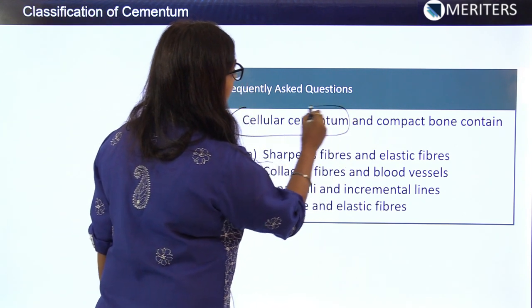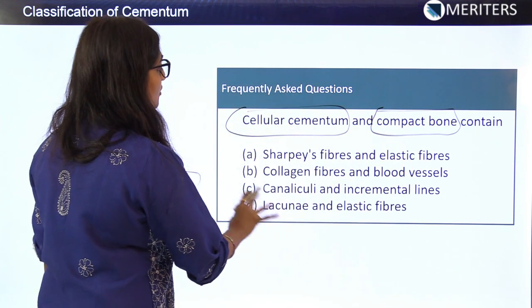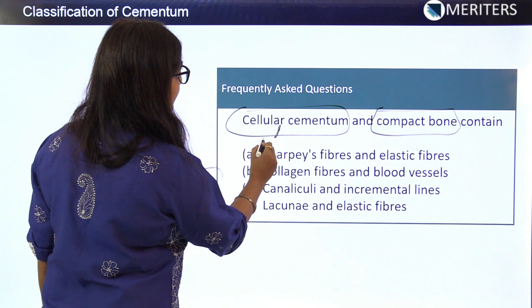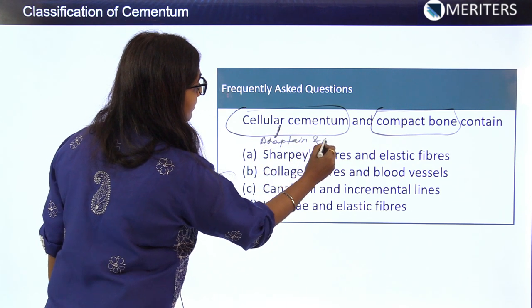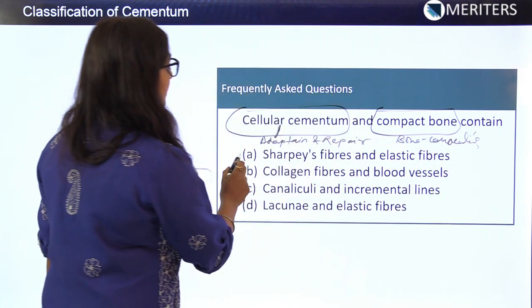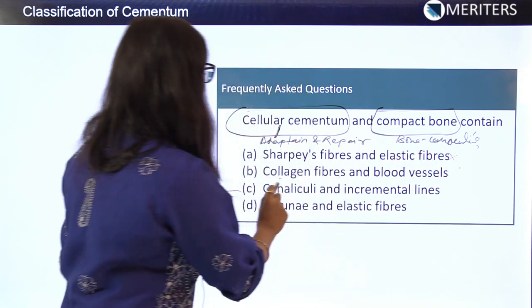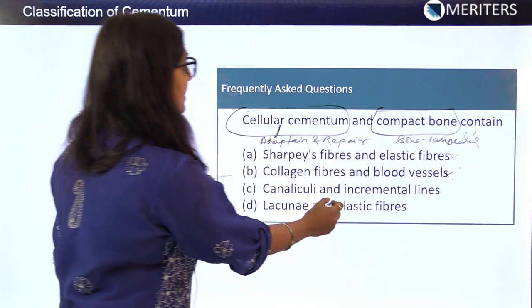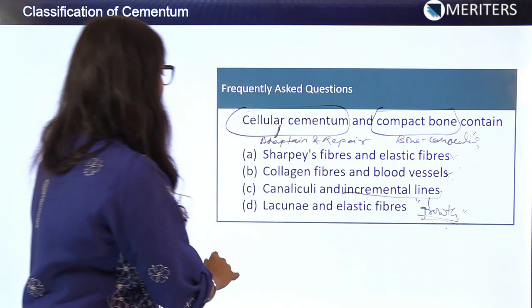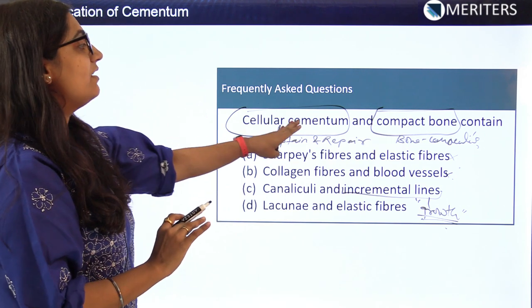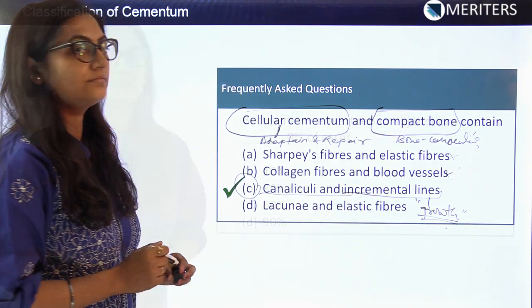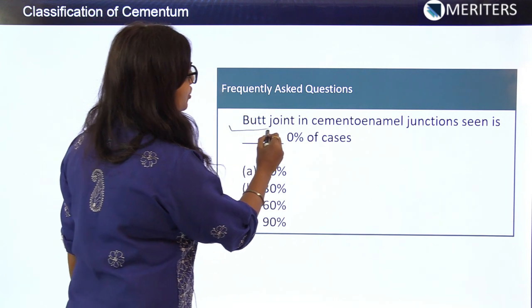MCQ: Cellular cementum and compact bone both contain what? Option A — Sharpey's fibers and elastic fibers — incorrect. Option B — collagen fibers and blood vessels — incorrect. Option C — canaliculi and incremental lines — this is the closest correct answer, as incremental lines represent growth in terms of repair or adaptation. Option D — lacunae and elastic fibers — incorrect. The correct answer is C: canaliculi and incremental lines.